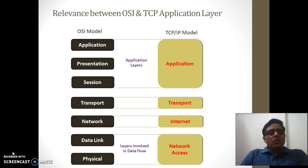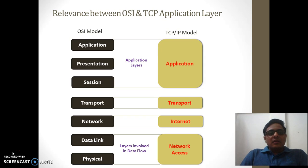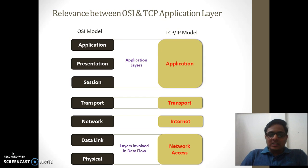This is how the OSI model and the TCP/IP model look, showing the relevance between them. The OSI model has seven layers and the TCP/IP model has four layers. The physical layer and data link layer of the OSI model are directly associated with the network access layer of TCP/IP. The network layer is called the internet layer in TCP/IP. The transport layer remains transport, and on the OSI side, session, presentation, and application — all three layers combined — are called the application layer in the TCP/IP model.